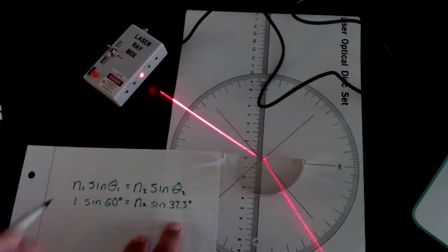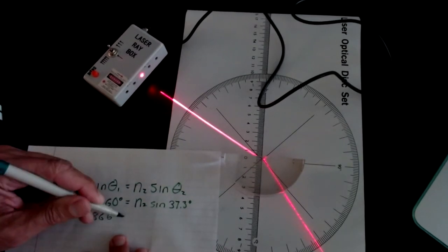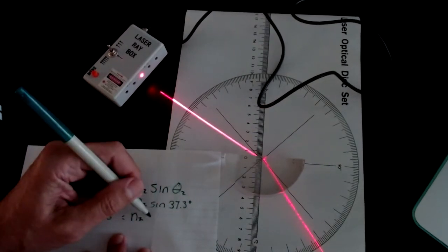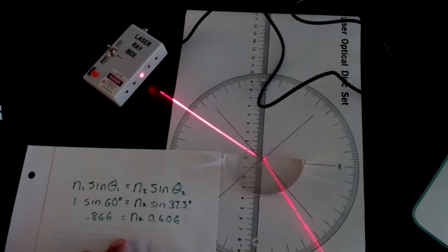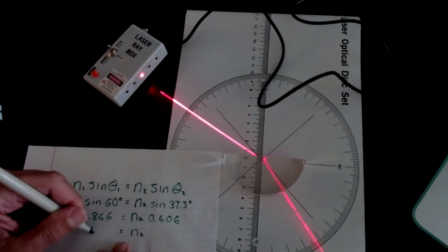Looks like I'm running out of ink. And when I solve this equation, sine of 60, 866 equals n2 times the sine of 37.3 degrees, which ends up being 0.606. And then if I divide both sides by 0.606, I get 1.43, n2 equals 1.43.